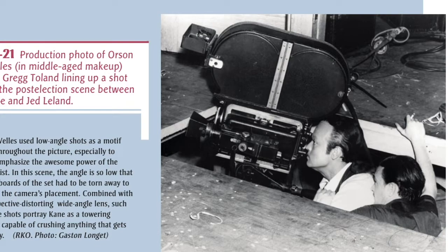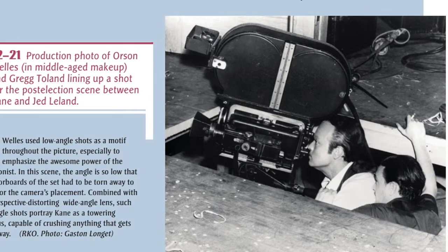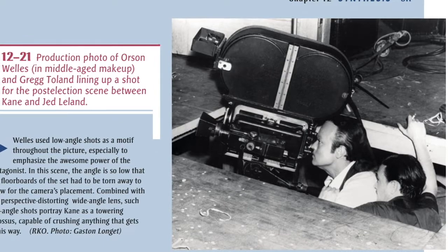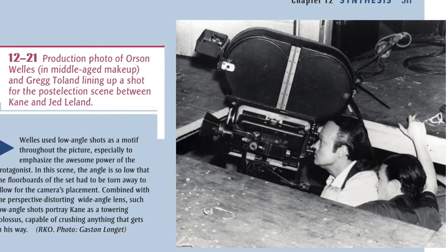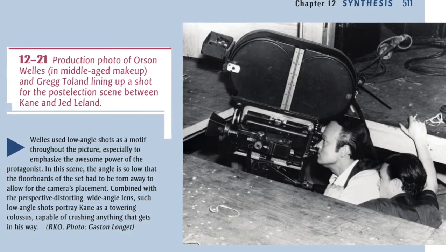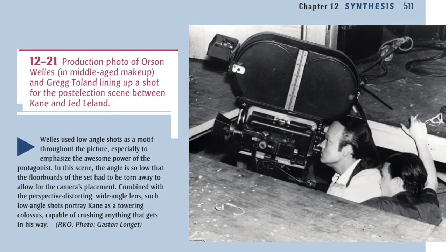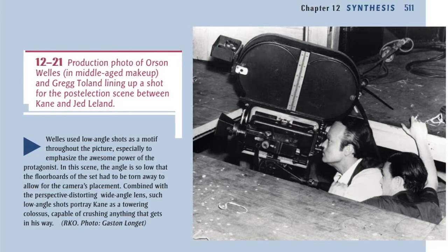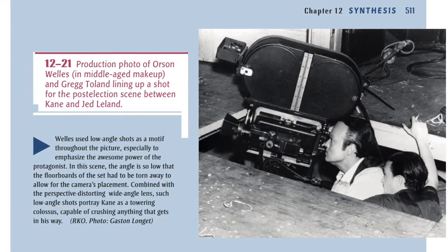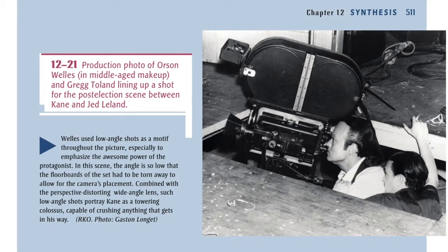12-21: Production photo of Orson Welles in middle-aged makeup and Greg Toland lining up a shot for the post-election scene between Kane and Jed Leland. Welles used low-angle shots as a motif throughout the picture, especially to emphasize the awesome power of the protagonist. In this scene, the angle is so low that the floorboards of the set had to be torn away to allow for the camera's placement. Combined with the perspective-distorting wide-angle lens, such low-angle shots portray Kane as a towering colossus, capable of crushing anything that gets in his way.